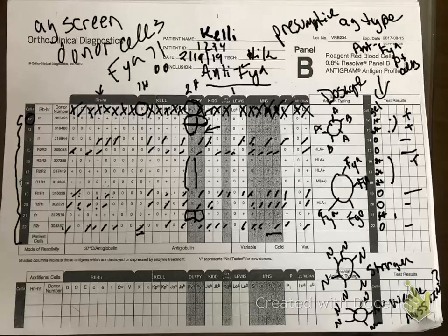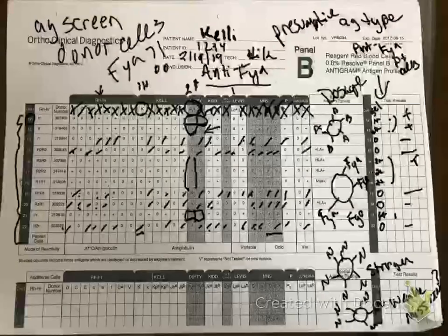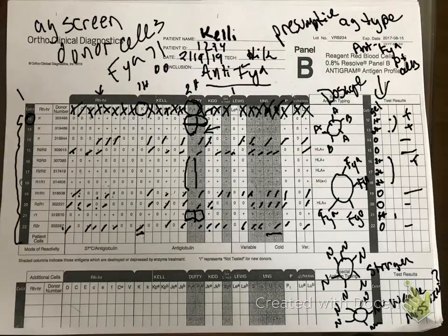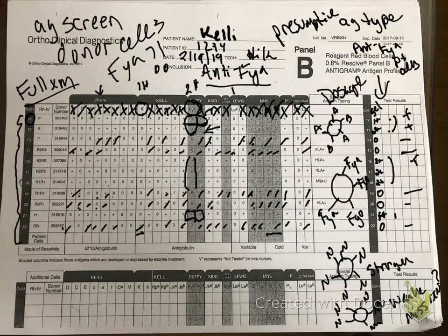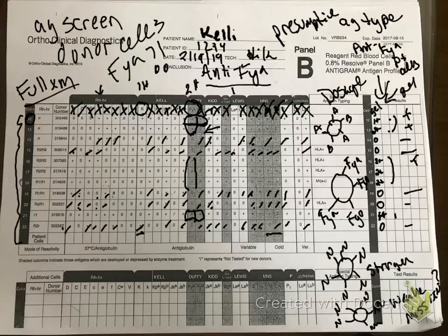Before I go — any patient identified with an antibody needs a full crossmatch. A full crossmatch means carrying it all the way through: immediate spin, 37-degree incubation, and the IgG phase with check cells, or a gel full crossmatch.